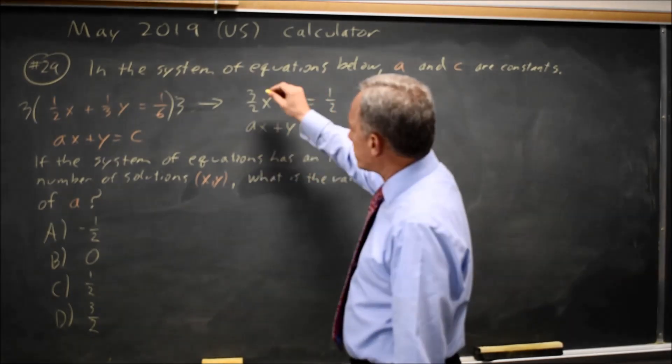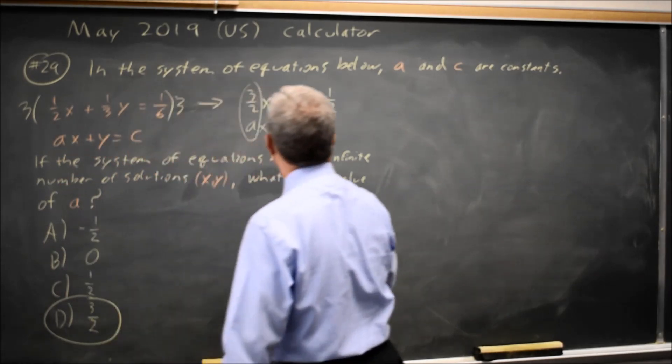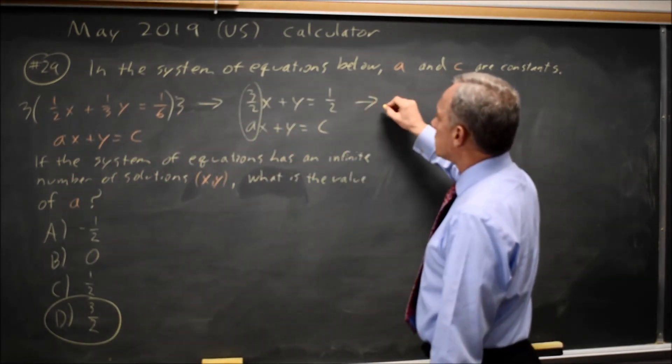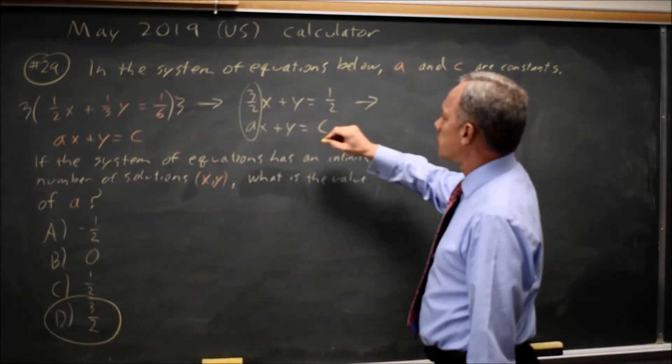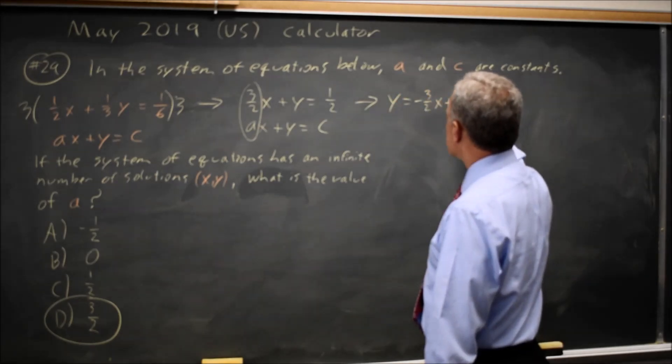You may already see that a has to be 3 halves to be parallel. If not, let's put it in slope-intercept form. If I subtract 3 halves x from both sides on this, y equals negative 3 halves x plus 1 half.